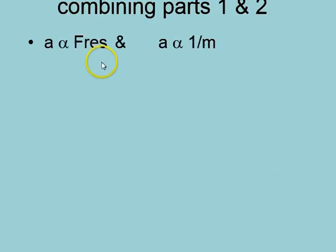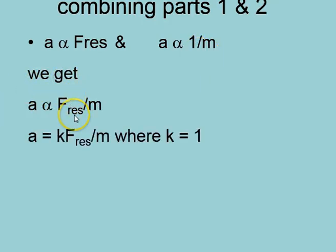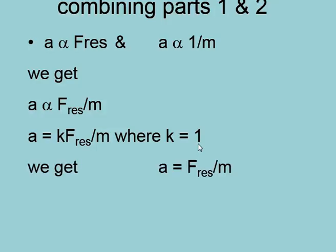So if we take Part 1 and Part 2 and combine them, we get this relationship. Mathematically we can always turn a proportionality sign into an equal sign by multiplying by the slope of a line. But in this case the slope of this line has a value of 1 — in fact that's how we define what a kilogram is. And thus we get his famous equation, written more commonly with F as the subject: F equals ma.